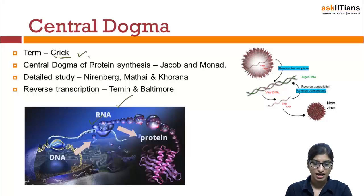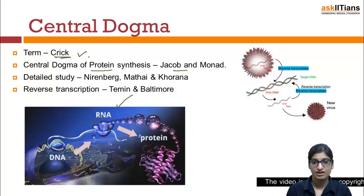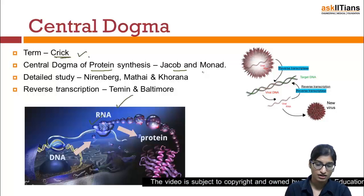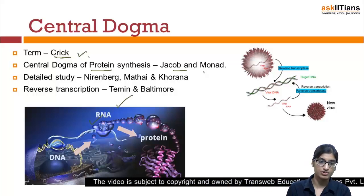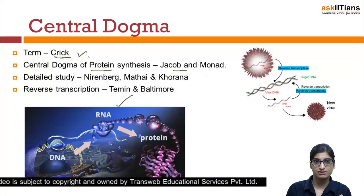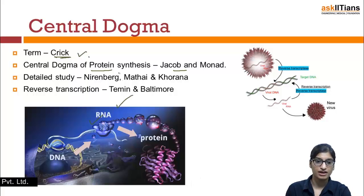Crick proposed that there is a unidirectional flow. The central dogma of protein synthesis was explained by Jacob and Monod. The detailed study of the central dogma was done by Nirenberg, Mathai, and Khurana.